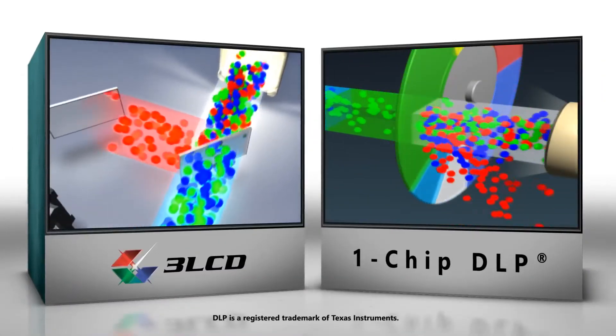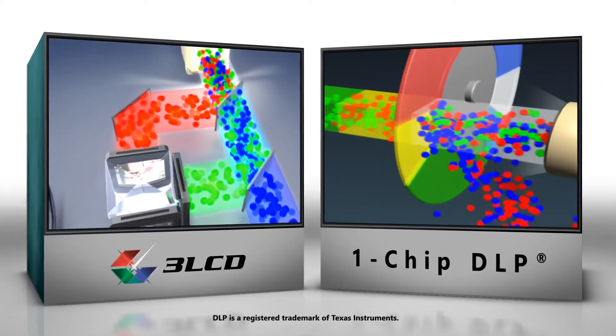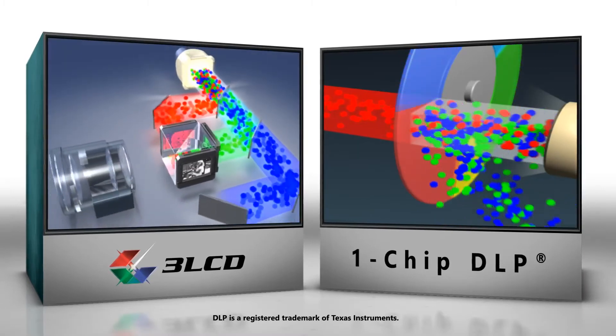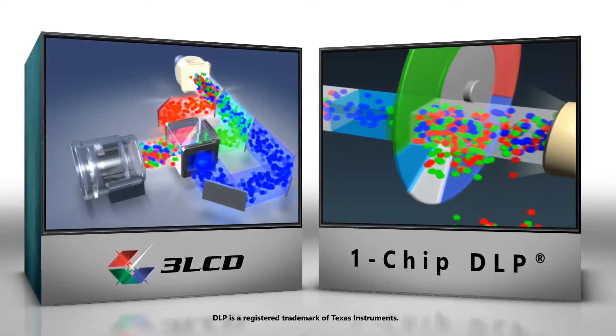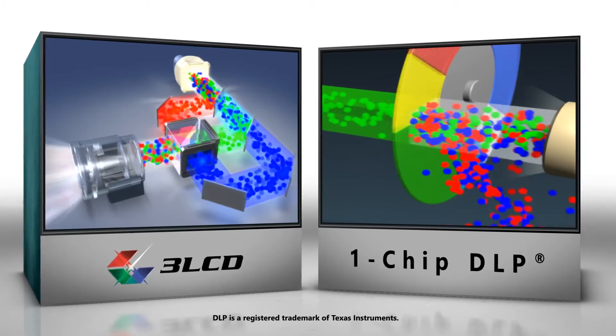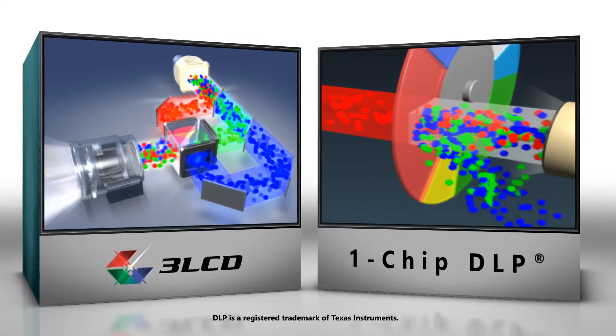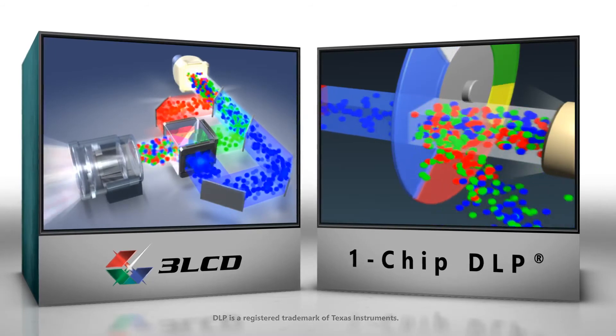Since it can only project one color at a time, the one-chip color wheel is inherently inefficient. Comparing the two technologies, 3LCD more efficiently uses the available light. In contrast, the one-chip system loses much of its light energy at the color wheel.